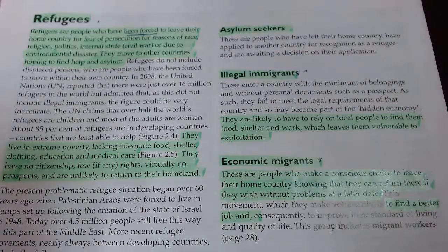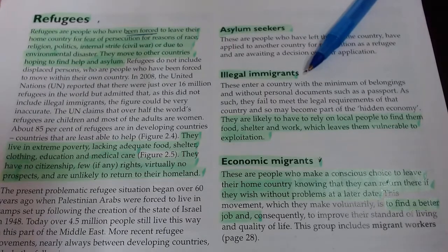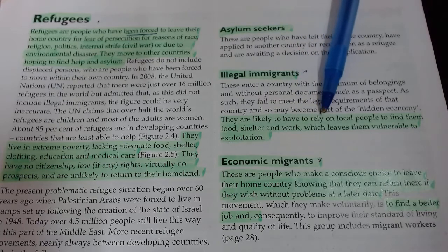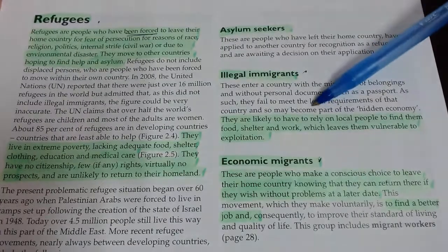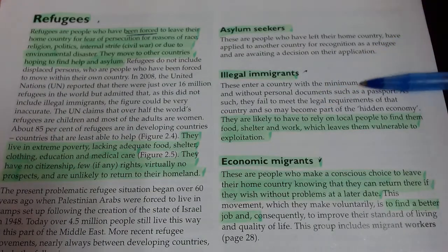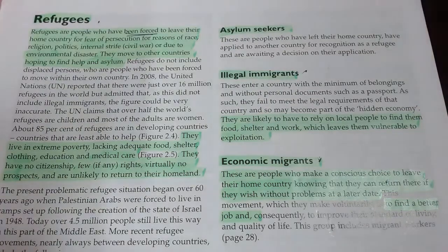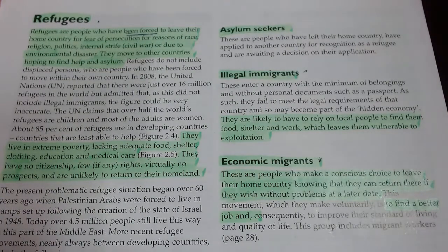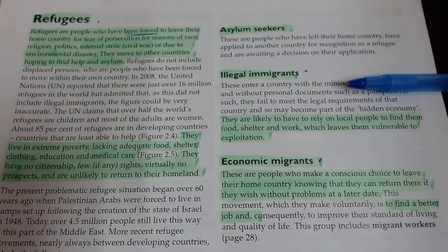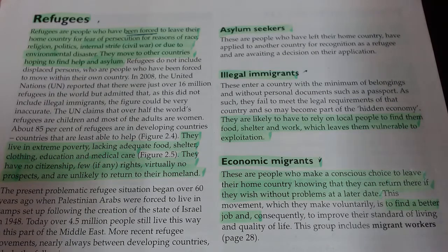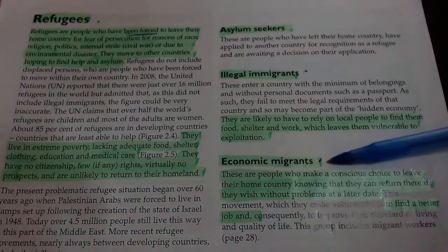We've already covered asylum seekers and illegal immigrants. I just want to highlight that illegal immigrants are likely to have to rely on local people to find them food, shelter, and work, which leaves them vulnerable to exploitation. Because they're not legally allowed to live and work in a place, they need to rely on locals to get them a cash-in-hand job and somewhere to stay — usually not very good quality. But remember, these people are leaving a terrible situation behind, so even a basic flat with a basic job is probably better than what they had before.